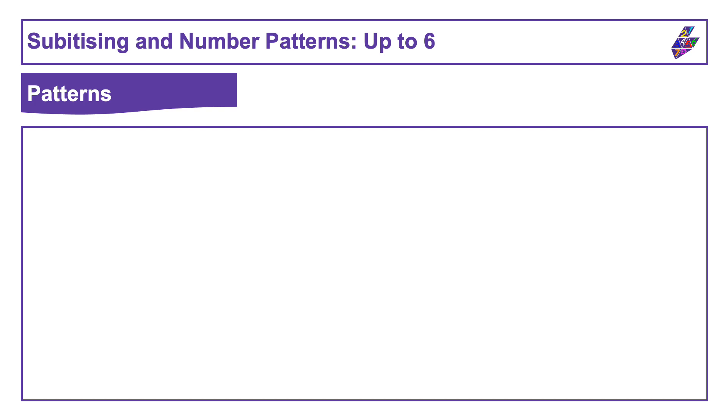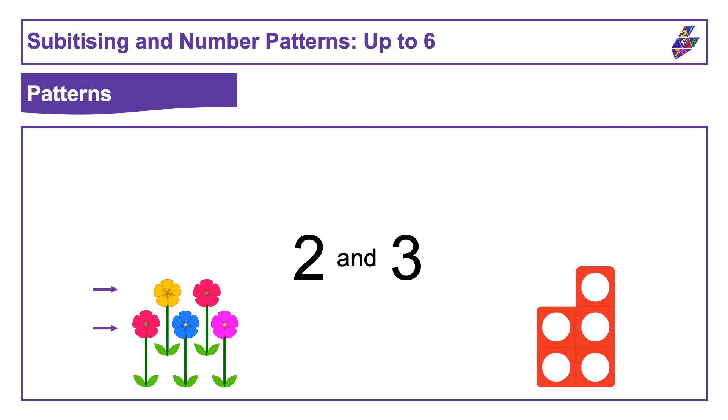You might have spotted different groups from the ones we just saw. With the flowers you might have thought about them as two on the top row and three on the bottom row. Or on the red shape, instead of seeing it as one group of five or a four and a one, you might have seen the circles grouped as a two and a three, a bit like the flowers.